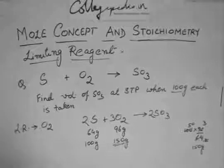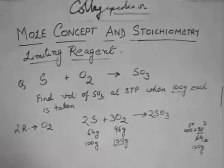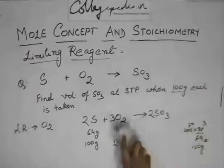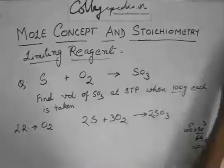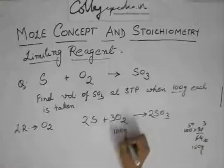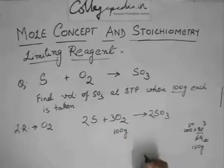Then further calculations, carry on with the limiting reagent. Don't take 100 gram sulfur. Now you have 100 gram oxygen.